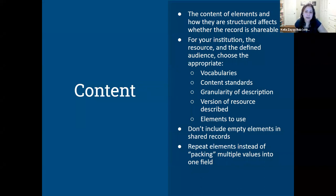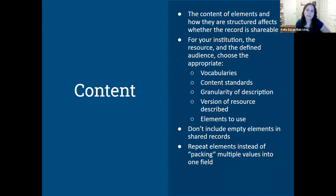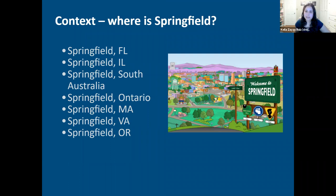Taking a closer look at content: by content we mean what information actually goes into the fields — how your fields are structured, what vocabularies you're using, and the granularity of the description. Looking back at the Ezra Meeker metadata record, that's a great example where the content doesn't match what's being described, other than maybe the title. Much of what's important here includes the things we talked about earlier: following standards, using elements appropriately, and using controlled vocabularies.